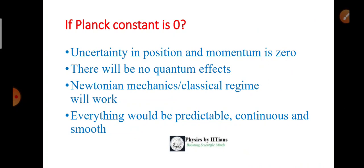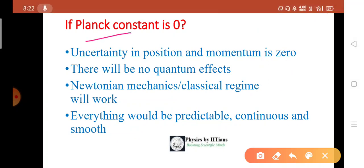What will happen if the Planck constant is zero? If the Planck constant is zero, there will be no uncertainty in position and momentum. So we can measure position and momentum simultaneously at any arbitrary precision we need. There will be no quantum effects and Newtonian mechanics or classical regime will work there and everything would be predictable, continuous and smooth. Nothing will be discrete.